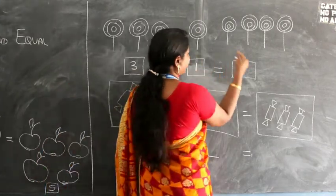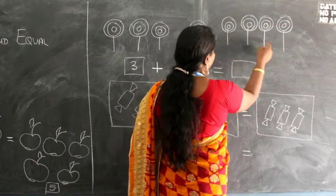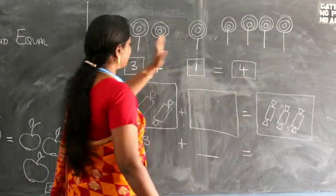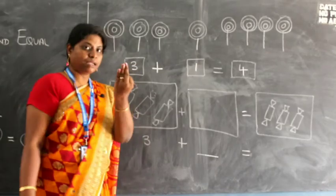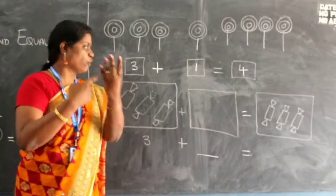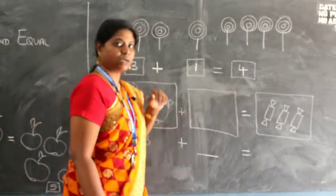you have to write equal to and write the answer. How many? One, two, three, four. Right. So three plus one is equal to four. Three plus one is equal to four. Right. So this is how you are going to write your statement.